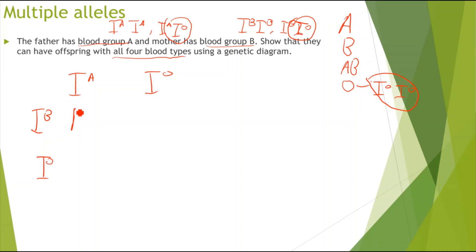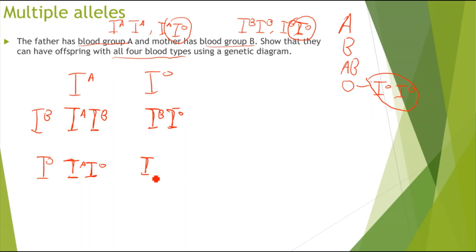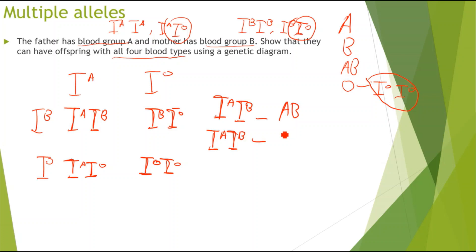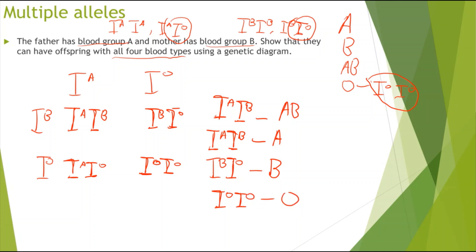Using the genotypes Iᴬ Iᴼ for the father and Iᴮ Iᴼ for the mother, crossing them gives: Iᴬ Iᴮ (blood group AB), Iᴬ Iᴼ (blood group A), Iᴮ Iᴼ (blood group B), and Iᴼ Iᴼ (blood group O). So I have produced all four blood types and shown it using a genetic diagram.